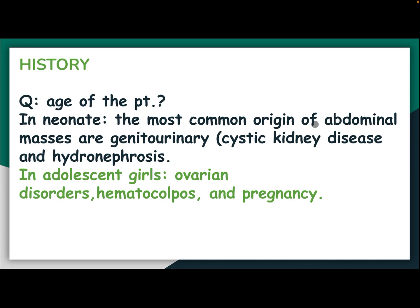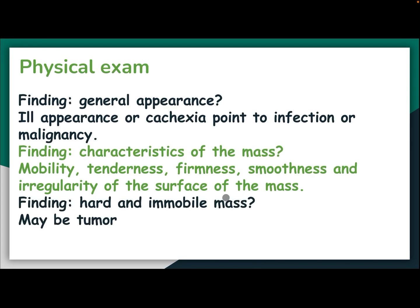Age of the patient matters. In a neonate, the most common origin of abdominal masses is genitourinary, including cystic kidney disease and hydronephrosis. In adolescent girls, consider ovarian disorders, hematocolpos, and pregnancy.